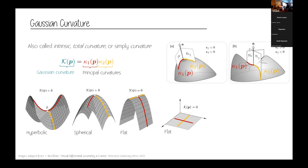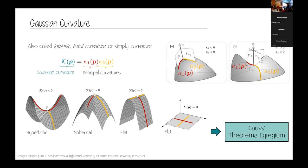This is one of the first and most important results in differential geometry by Gauss, called the Theorema Egregium — which actually means 'totally awesome theorem' in English. Gauss found this to be a super cool result.